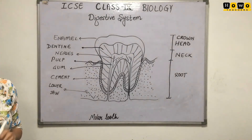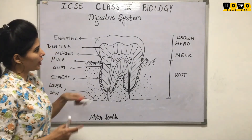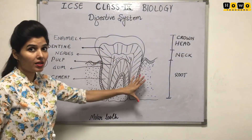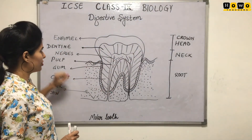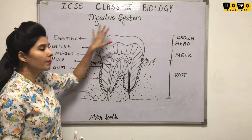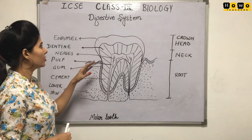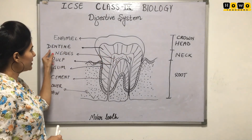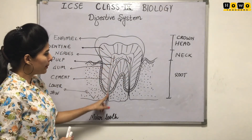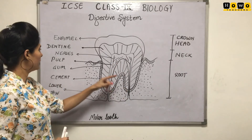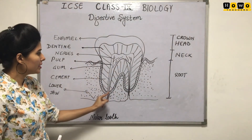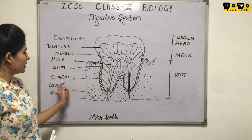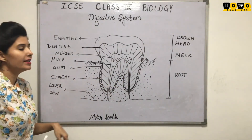So these are the labellings you have to remember. The upper portion is the crown, then the neck region, below that it is the root region. Here the topmost part, or the hardest substance, is enamel. Then a layer of dentine is there. In between the pulp there is the presence of nerve. Then we are having the W shape that we drew, that was the gum. Then cement and the lower jaw.